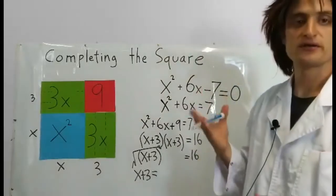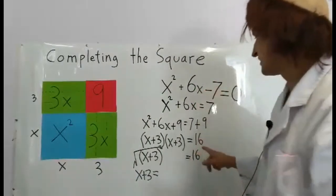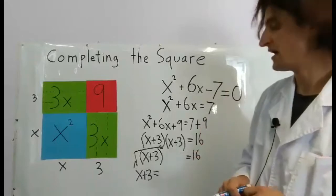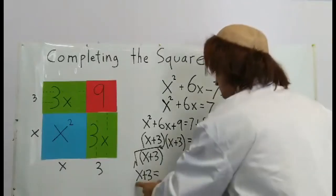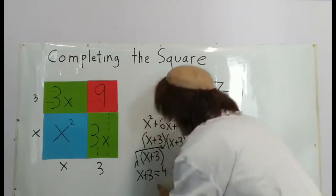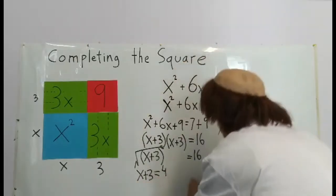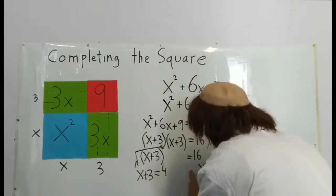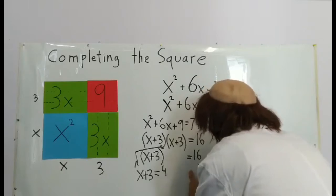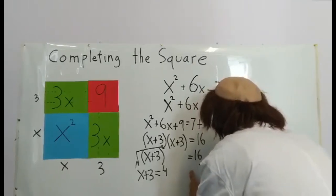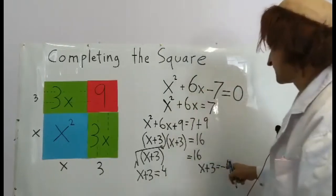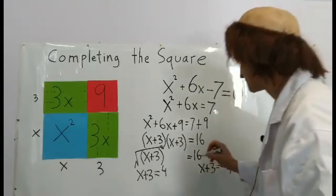You have to rewrite this but put a negative 4: x + 3 = -4, because -4 times -4 also equals 16.